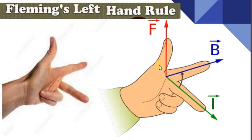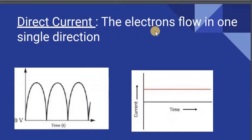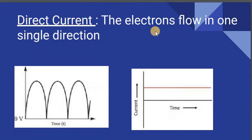Then your thumb will point the direction of the force acting on the conductor. Now we'll see direct current — when the electrons flow in one single direction, we call it as direct current. This is the waveform of the direct current.